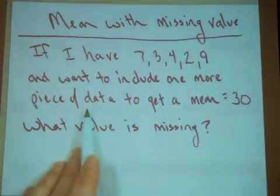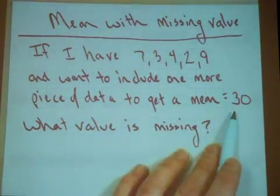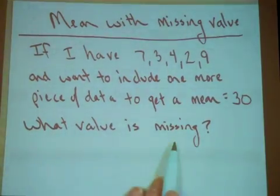And I want to include one more piece of data, one more number, so that I'll get a mean equal to 30. I need to figure out what value is missing.